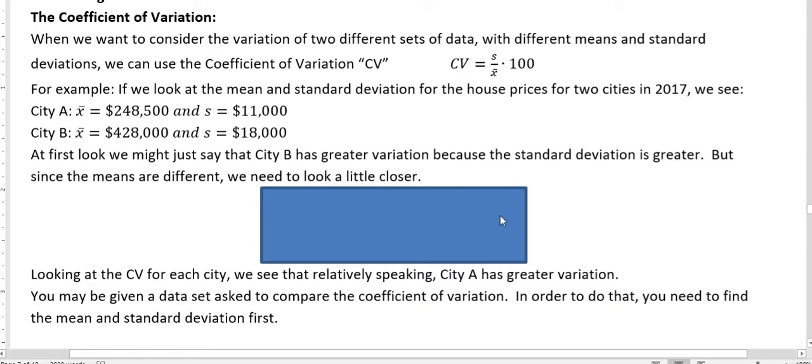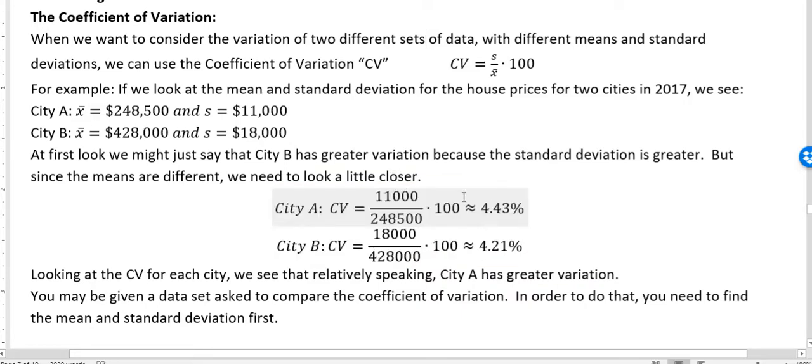Using that formula for City A, we have the standard deviation of $11,000 divided by the average house price of $248,500. If we divide that and multiply by 100, we get approximately 4.43 percent, rounded to the hundredths place.